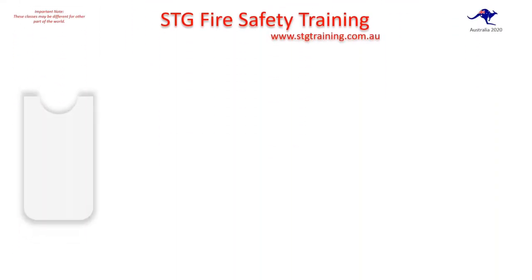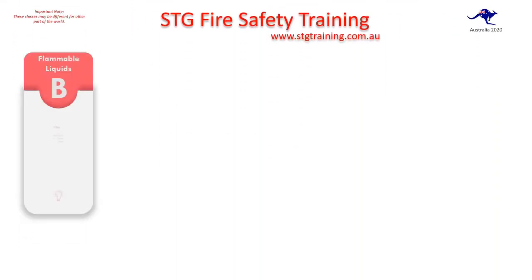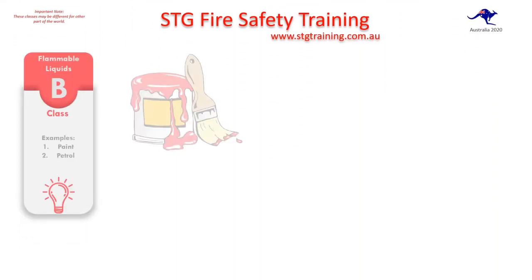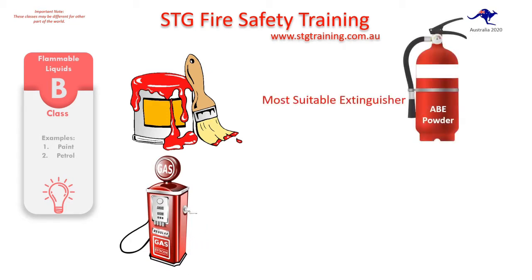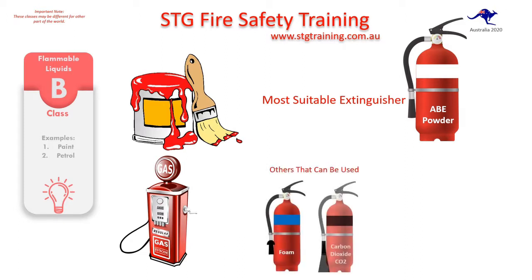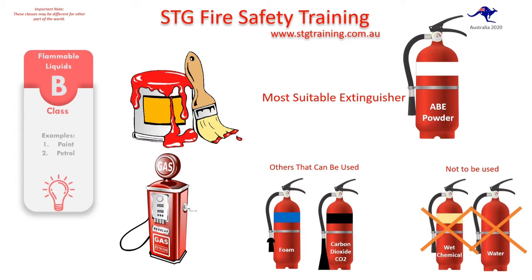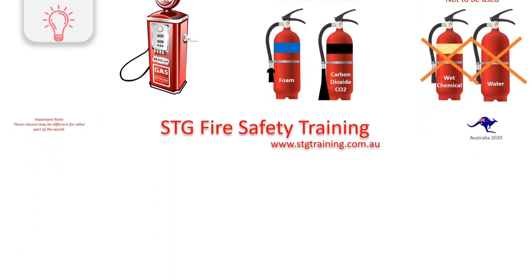The next class is Class B — your flammable liquids, like your paint, oil-based paints, and petrol. The most suitable extinguisher is your ABE powder, and again there are some others you can use and some that you probably shouldn't use.